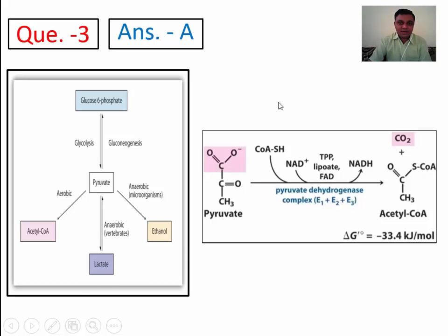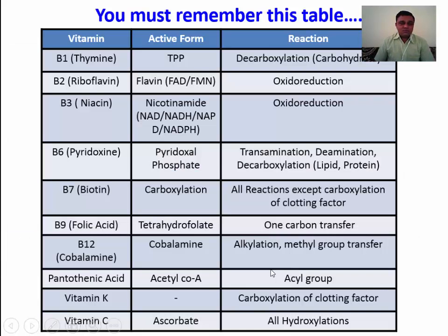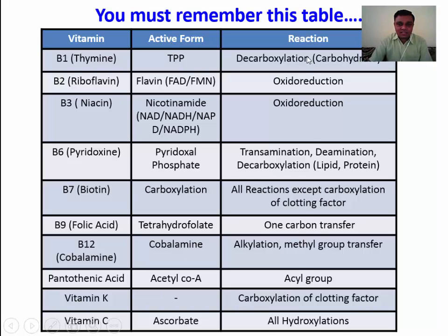In thiamine deficiency, there will be accumulation of pyruvate and thereby accumulation of lactate due to increased anaerobic glycolysis. This is a very important table you must remember. There are vitamins which act as coenzymes. These are the active forms of those vitamins and these are the reactions where each is utilized as a coenzyme.